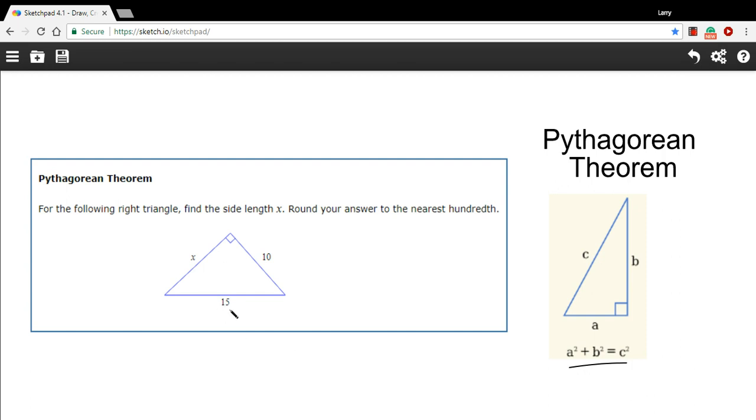The hypotenuse in a right triangle is always the longest side. It's also the side that's opposite of the right angle, so you can find it straight across from the right angle. So our C in this one is 15, and then the other two we can just call A and B as we like.